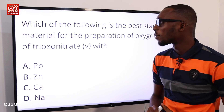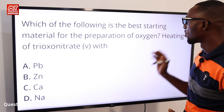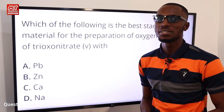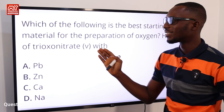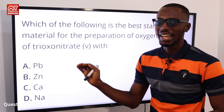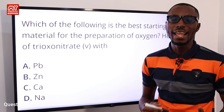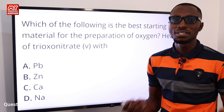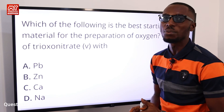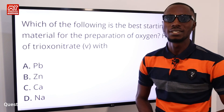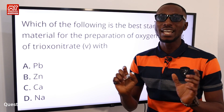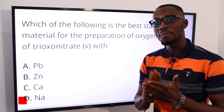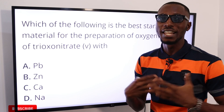Question ten: which of the following is the best starting material for the preparation of oxygen by heating trioxonitrate(V) with a metal? When trioxonitrate(V) is heated with lead, you get lead nitrate — a redox reaction that produces lead oxide, nitrogen dioxide, and oxygen. So lead is a good starting point for the preparation of oxygen, making the answer option A. That's all for this segment — don't forget to like, subscribe, and ring the bell notification for the next video.